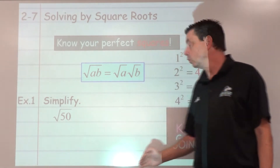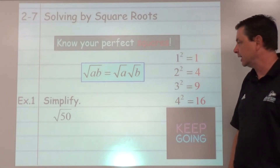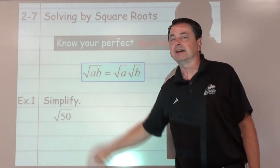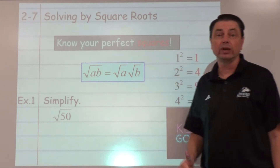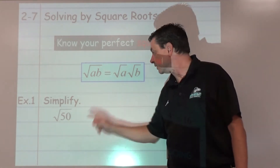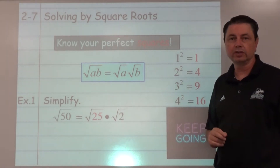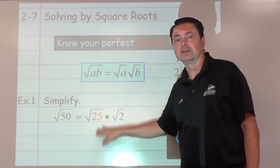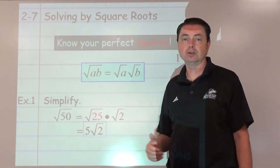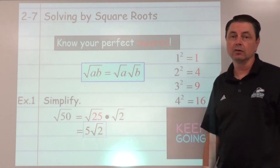Sometimes there may be more than one. The farther down the list, the bigger the number, the better — it's going to mean less work in the end. So hunt your list. Which of our perfect squares is a factor of 50? It's 25. We want to factor it into 25 times 2. So we split that up to be square root of 25 times the square root of 2. The square root of 25 is 5. So our final answer is 5 square root of 2, in simplest radical form.